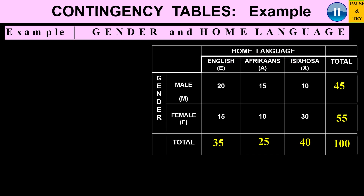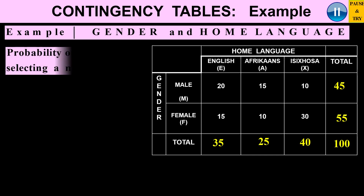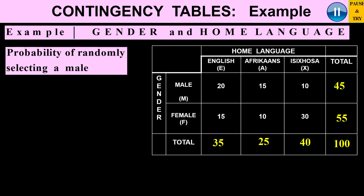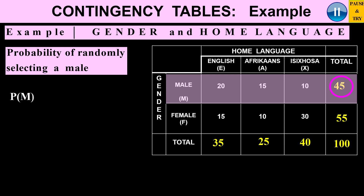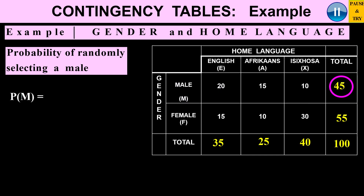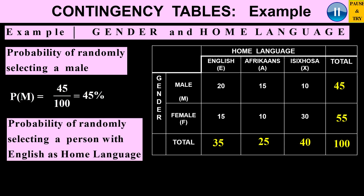Now let's use that contingency table to find probabilities. We want the probability of randomly selecting a male. Looking at the males, there are 45 males out of 100 people in total in the survey. So the probability of getting a male is 45 over 100, which is 45%.